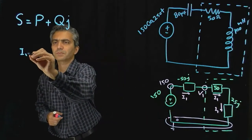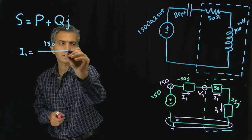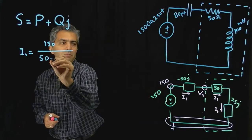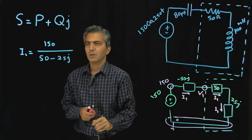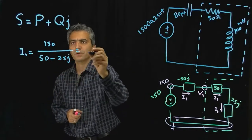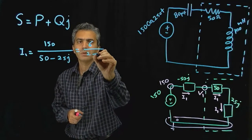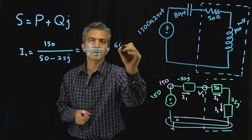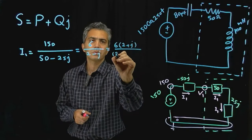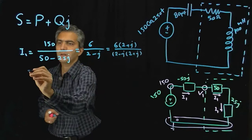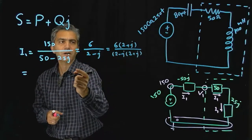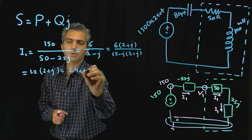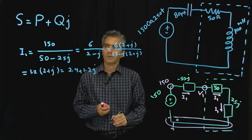For current I1, it's the voltage 150 divided by all three impedances in series: 50 plus 25j minus 50j, which gives 50 minus 25j. Dividing top and bottom by 25 gives 6 over 2 minus j. Multiplying top and bottom by 2 plus j gives 6 times (2 plus j) over 5, which is 1.2 times (2 plus j) — in other words, 2.4 plus 1.2j.